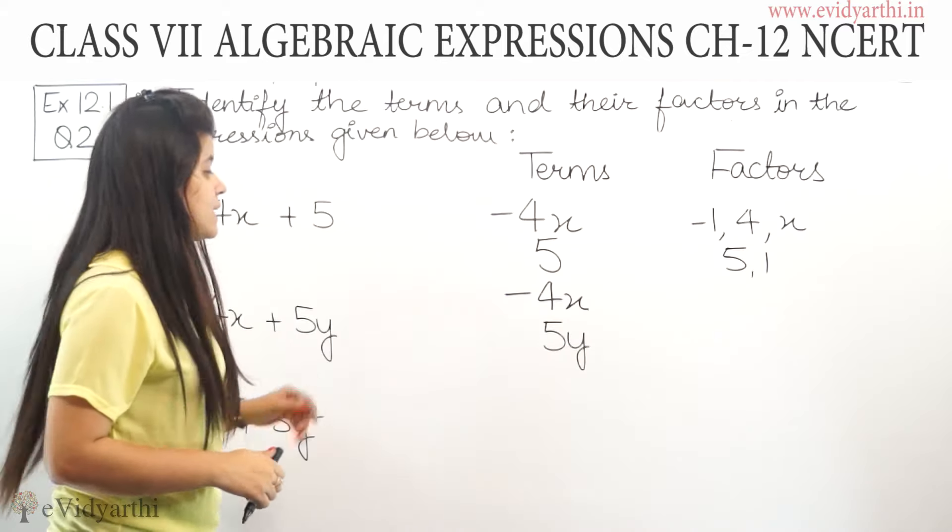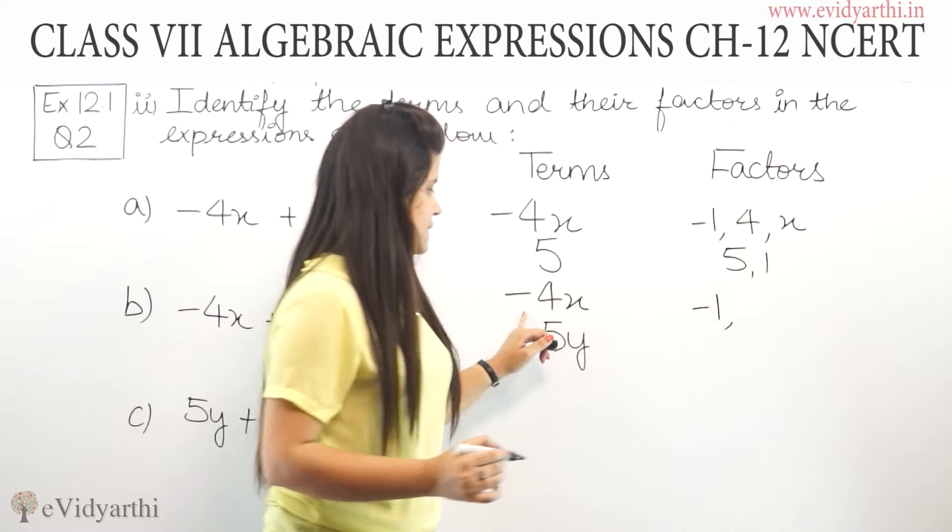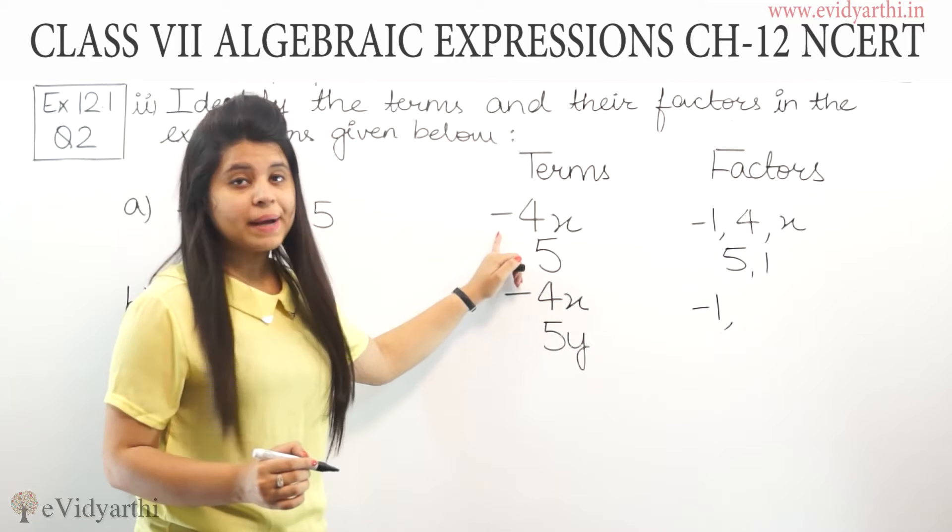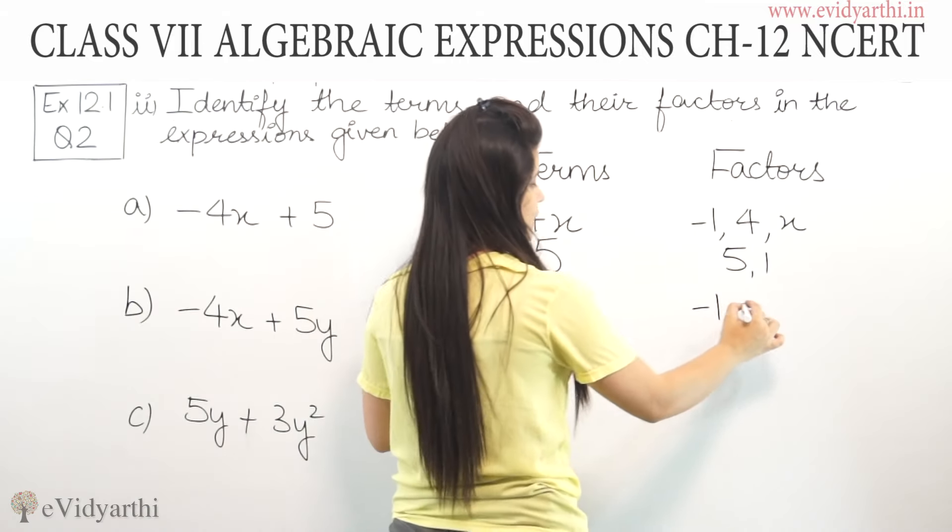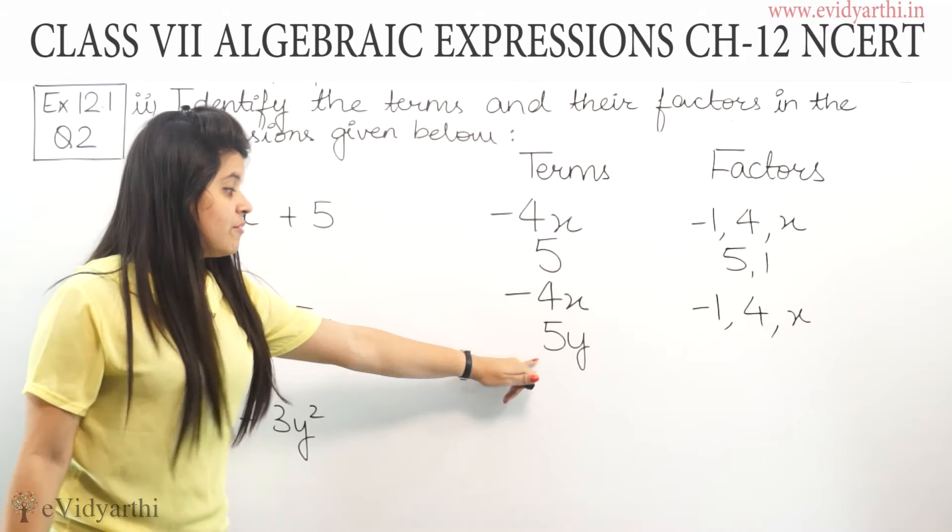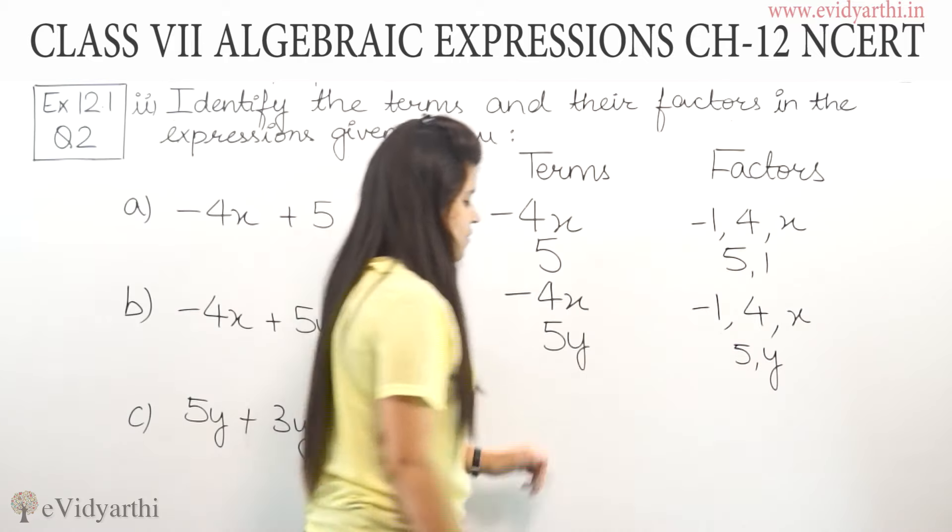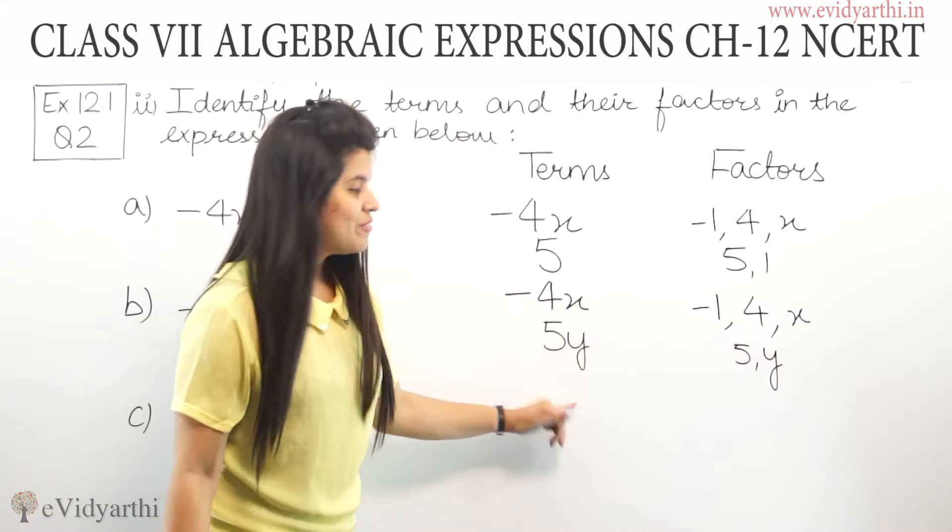These are the two terms. Now, let's write the factors. For -4x, it's the same as before: -1, 4, and x. For 5y, since 5 is multiplied by y, the factors are 5 and y.